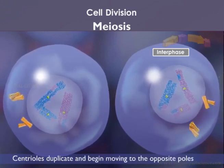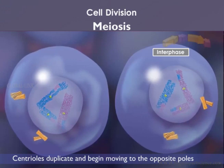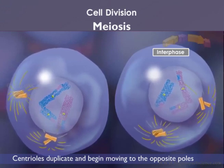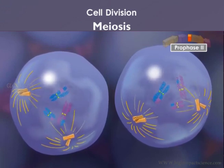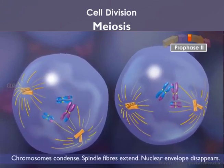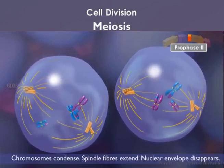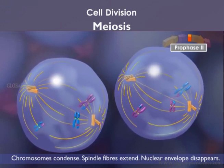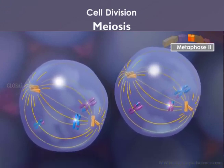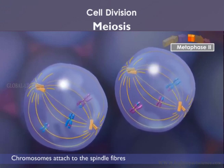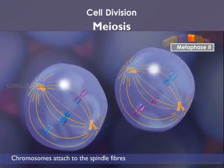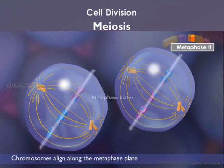The centrioles duplicate and begin moving to the opposite poles of each cell while extending the spindle fibers. In prophase 2, the sister chromatids condense, the spindle fibers extend, and the nuclear envelope disappears. In metaphase 2, the sister chromatids are attached to the spindles, with the sister chromatids attached to the opposite poles. The chromosomes align along the metaphase plate.